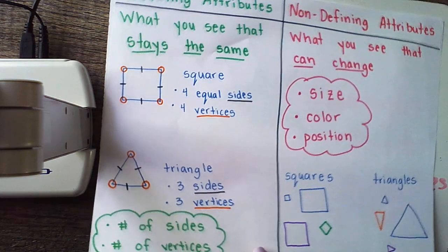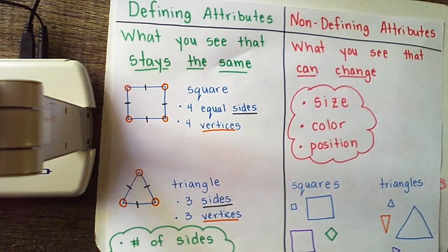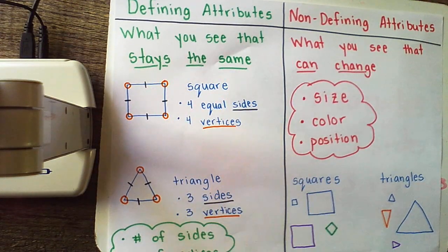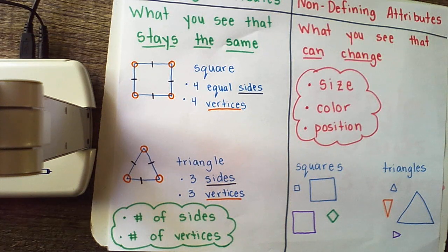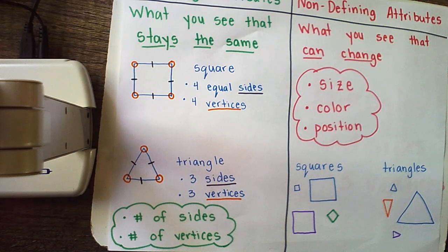So, as you are working on the questions in your form, keep in mind that defining attributes of a shape are what always stay the same about that shape — the number of sides and number of vertices. Size, color, and position can change. Go ahead and click right below the video and you can complete your assignment. See you guys tomorrow!